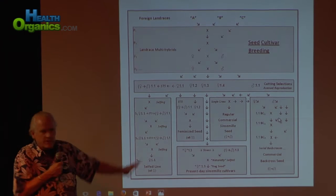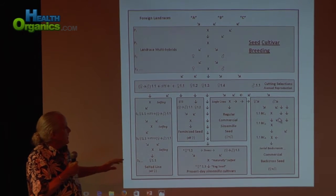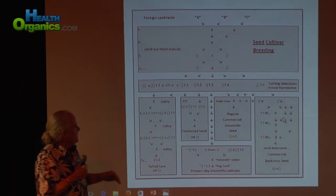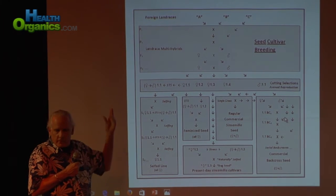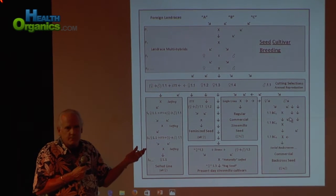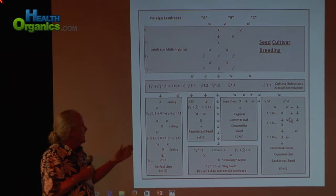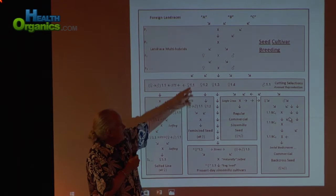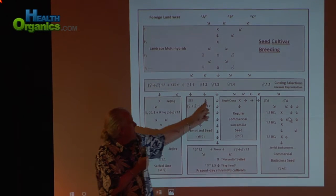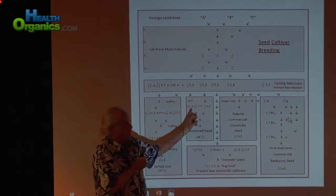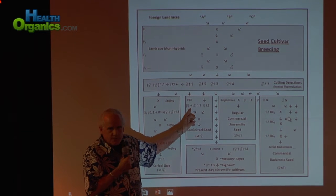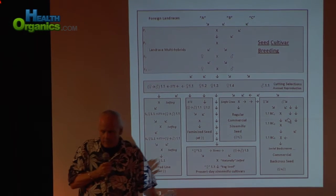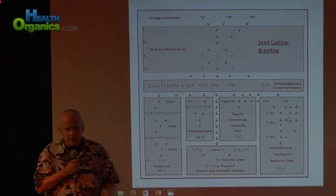All this has changed relatively recently. Now we have feminized seed. As explained by Dennis, you use silver ions — the most common being colloidal silver and STS. You subject a female to this; it turns from a female to a female with male flowers, genetically still the same. You self them and end up with feminized seeds — all females in the best-case scenario, should you have chosen the proper parents.